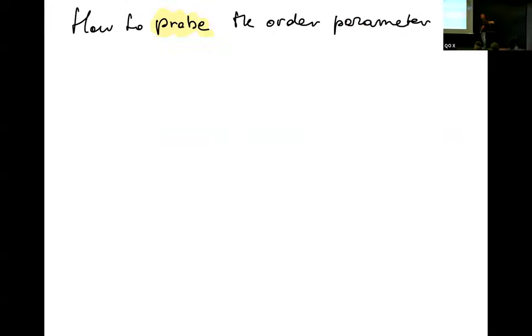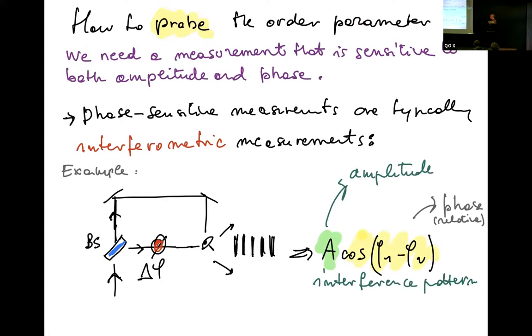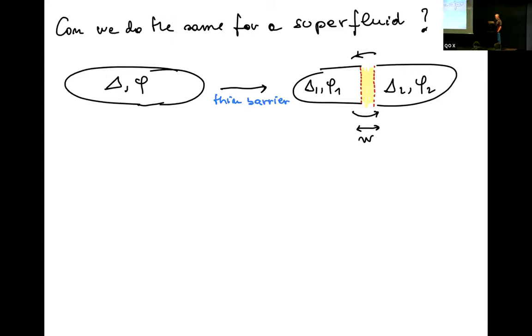So how is it possible to probe the order parameter in this case? Typically, you would like to have a measurement that is sensitive to both amplitude and phase. Typically, these are phase-sensitive measurements or interferometric measurements. This is an example that you can take for laser field or optical fields. You take a wave or whatever field that you split in two, then you create a difference in phase. And then when you recombine them, you will see an interference pattern with a certain amplitude and a term that is connected to the relative phase.